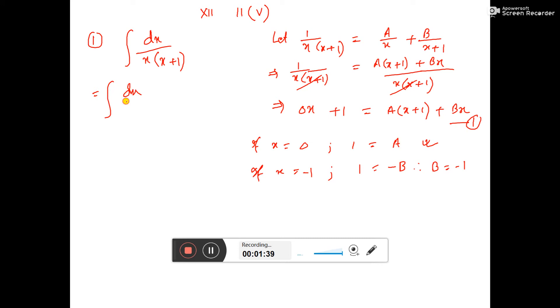Now we can write the integral. The value of a is 1, so we have 1 by x, and b value is minus 1, giving minus 1 by x plus 1, dx. This becomes integral of 1 by x dx minus integral of 1 by x plus 1 dx.